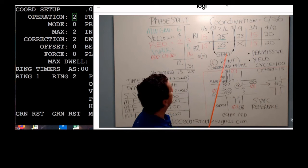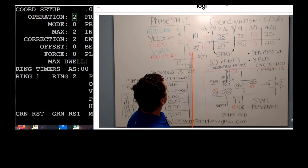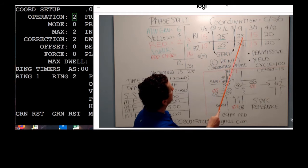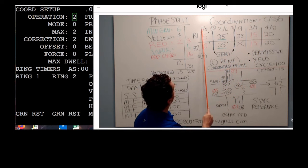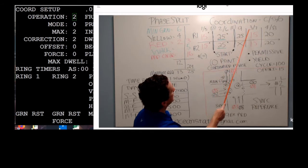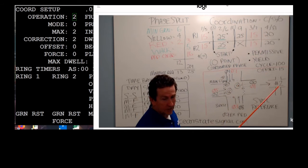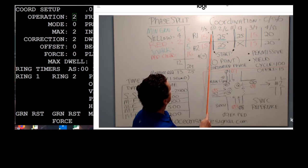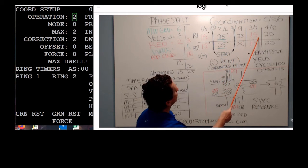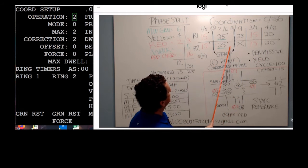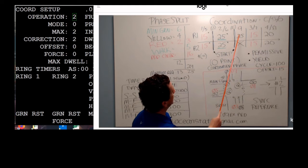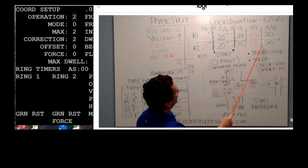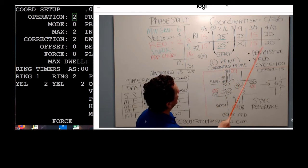If you look on the chart, I have ring one and ring two. Ring one has phases one, two, nine, three, and four — just like we covered in ring structure last week. Ring two is five, six, seven, and eight — we don't have a nine in ring two because it's up in ring one. So: one, two, nine, three, four in ring one; five, six, nothing, seven, eight in ring two. The 100 seconds breaks out as 100 seconds for ring one — that's the key.